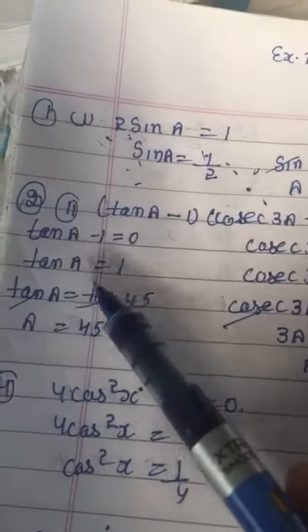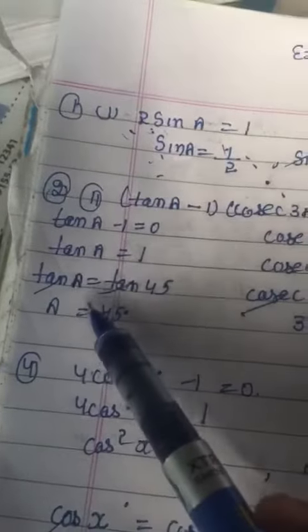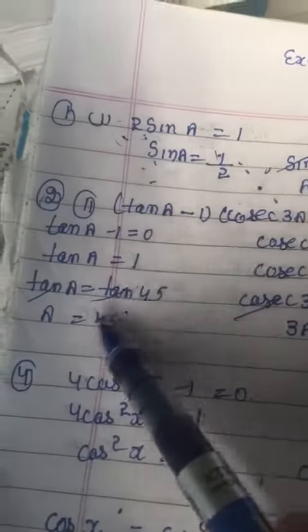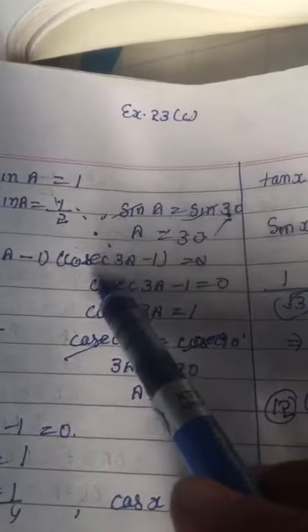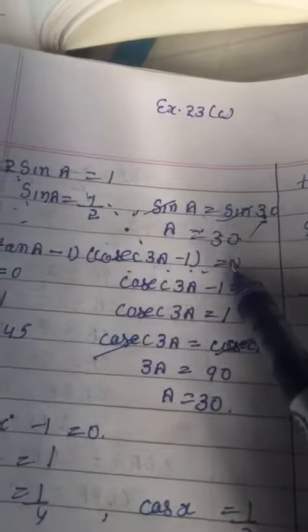tan A = 1. When tan A = 1, tan 45°. Tan and tan will cancel out, A = 45. Then cosec(3A - 1) = 0.